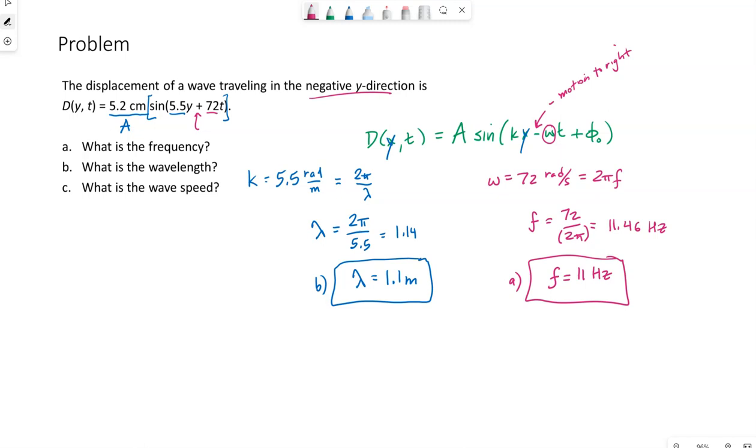Now for c, we're wanting the wave speed. We can calculate wave speed by wavelength times frequency. Now I mentioned before, wavelength and frequency don't determine the speed, but if we happen to know wavelength and frequency, we can totally use those to calculate what the speed is. They just don't change the speed individually.